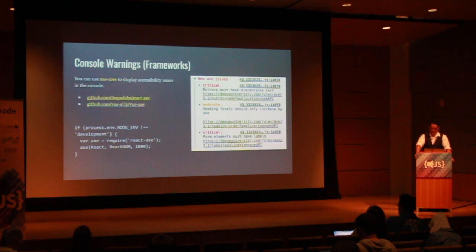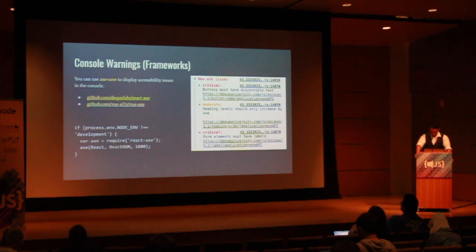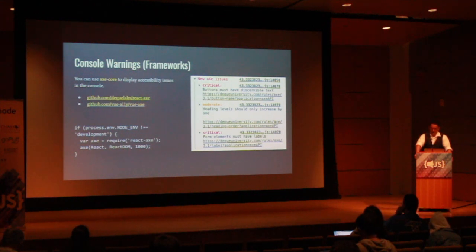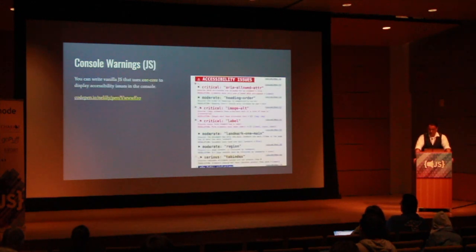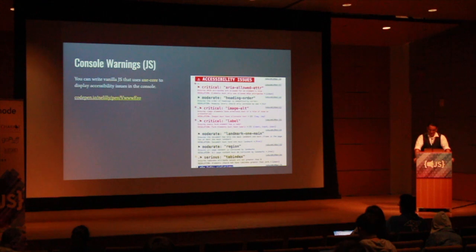This will catch issues that might not be caught in linting. In the web browser, your page is actually rendered. If you had a button in React that was using a variable for the text, the linter will pass that. But if the variable was an empty string, it would get flagged here — as you can see in the first error in this image: buttons must have discernible text. If you don't use React or Vue, that shouldn't stop you from getting accessibility warnings in your console. You can import Axe Core in plain old JavaScript and write the console logs yourself. Just remember to check your environment, import Axe Core, and run the code after a set timeout. That will give the page enough time to render so that it can actually see if there are any issues.